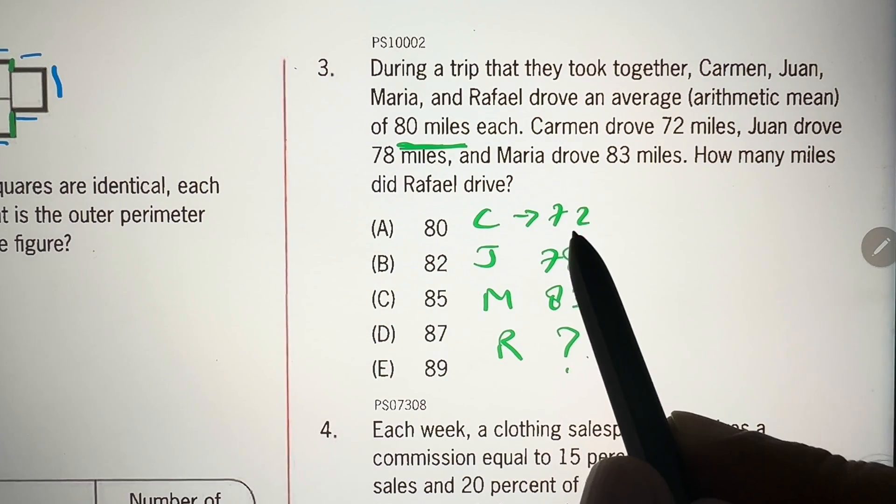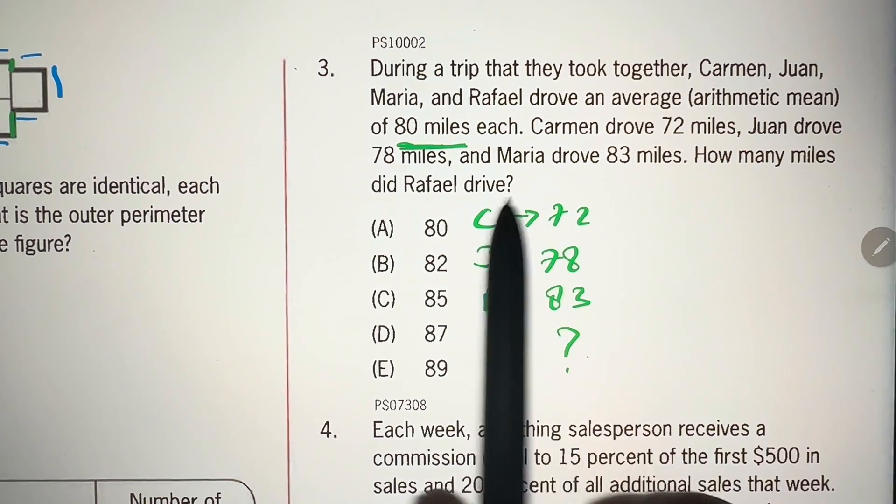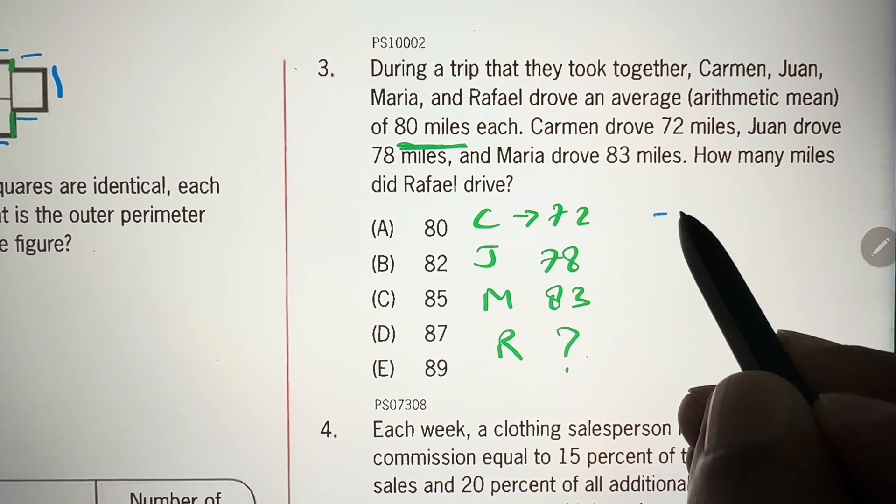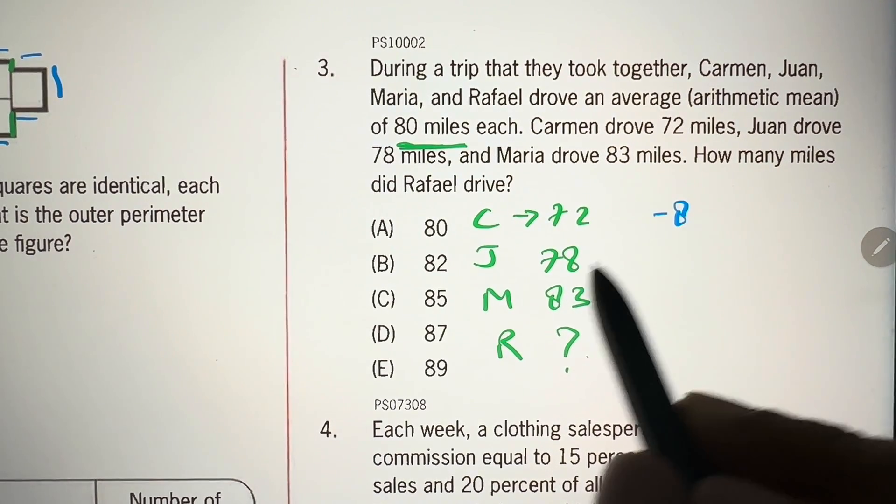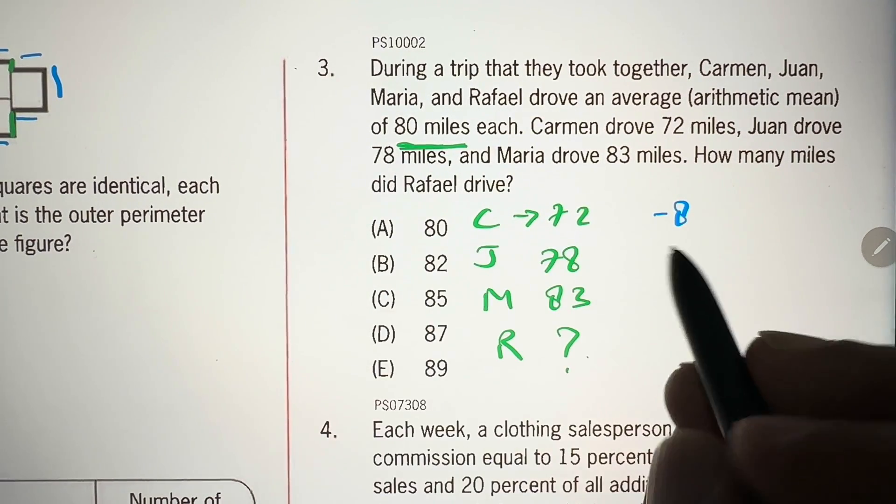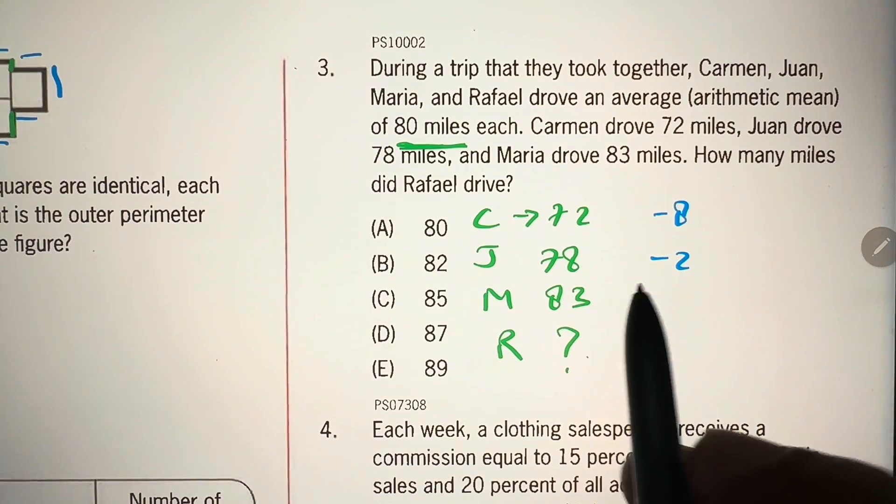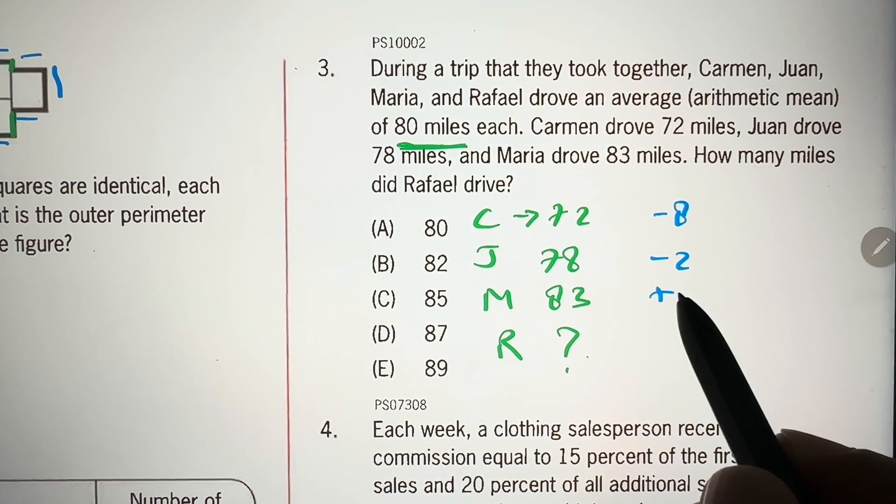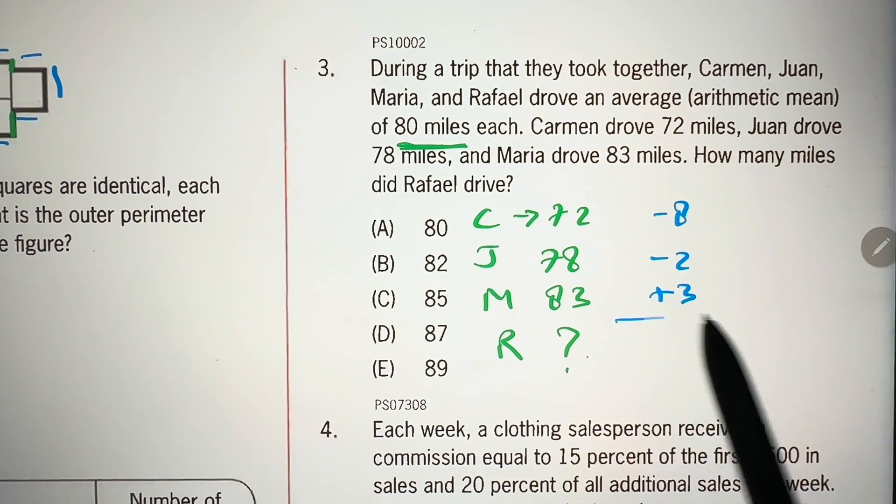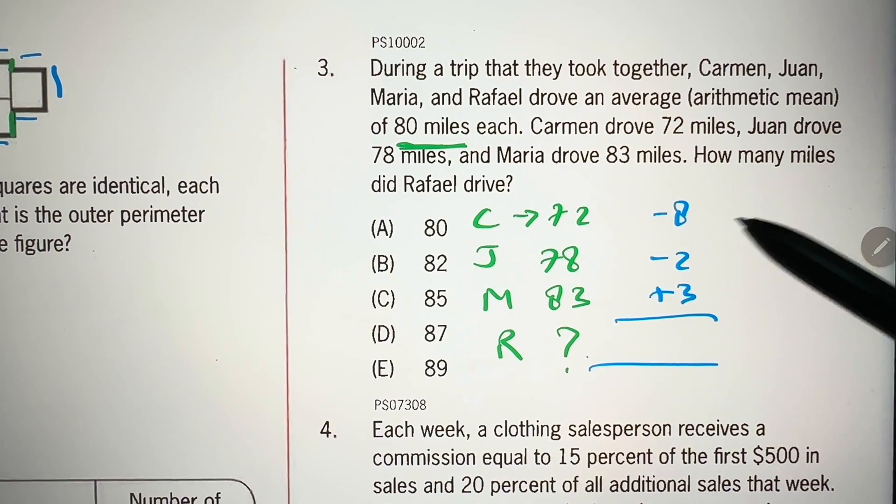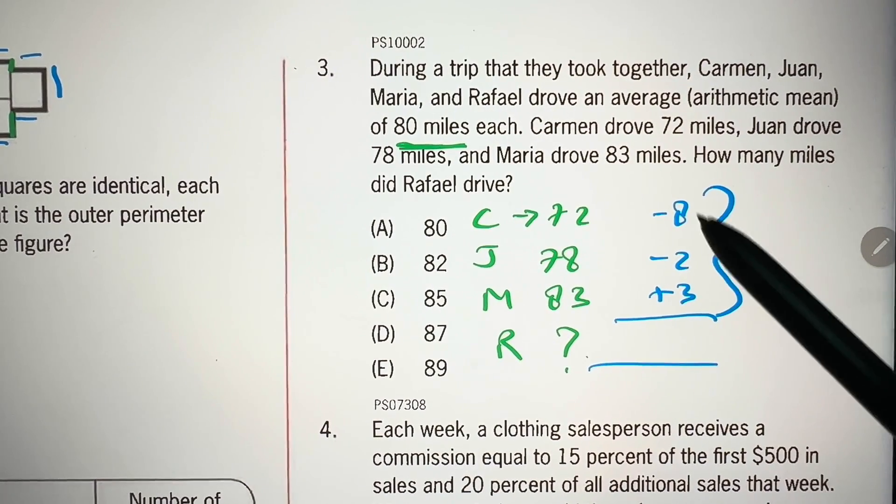Now, this 72 is how much less than 80? 8, so we'll write minus 8. 78 is 2 less, so minus 2. 83 is 3 more, so plus 3. And now, if we add these 3,